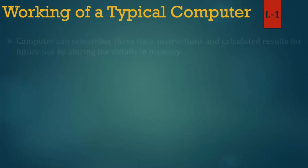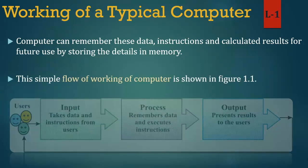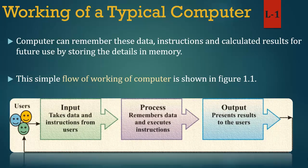A computer can remember data, instructions and calculated results for future use by storing the details in memory. This simple flow of working of a computer is shown in figure 1.1. The user gives input — data and instructions. Then the computer processes it, remembering data and executing instructions. After processing, it gives output by presenting results to the user.